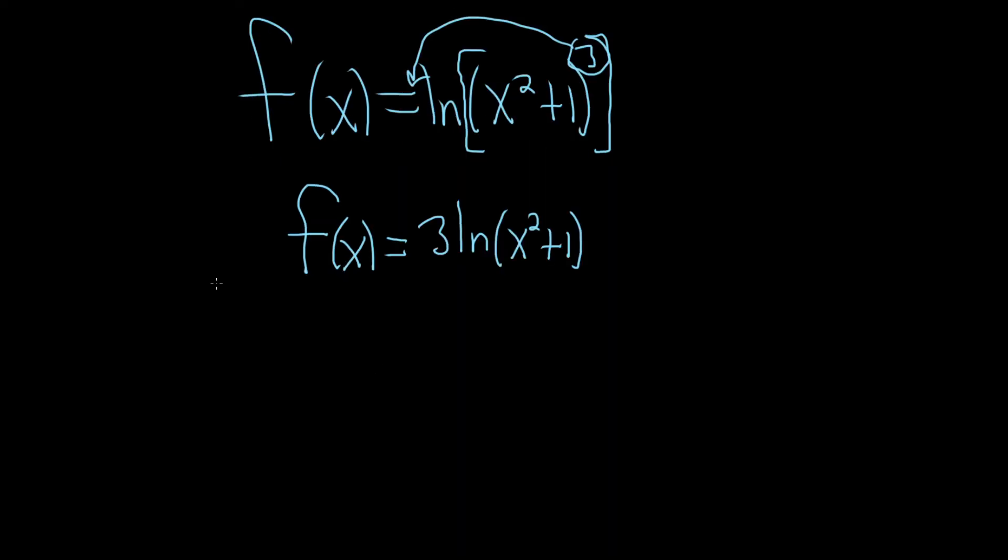Alright, let's go ahead and take this derivative. So f prime of x, the 3 hangs out. And then when we take this derivative, it's just 1 over whatever is there, so x squared plus 1,